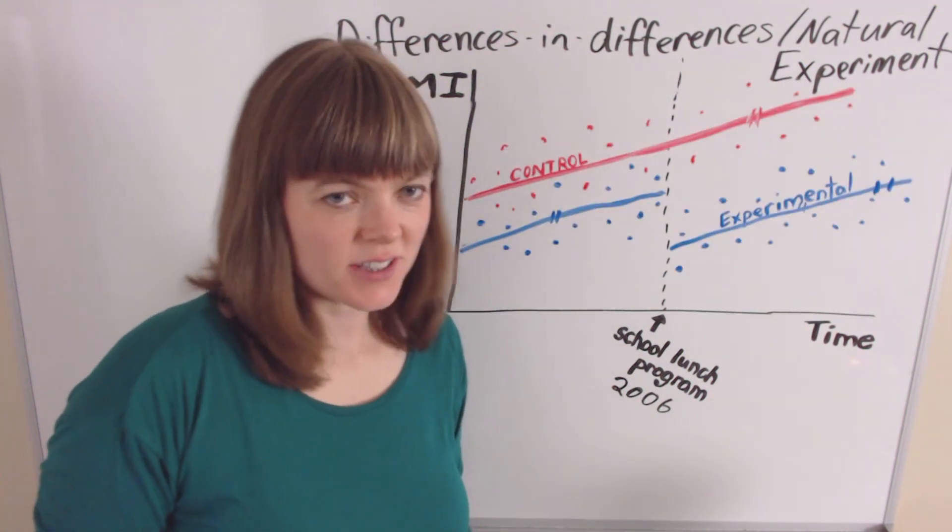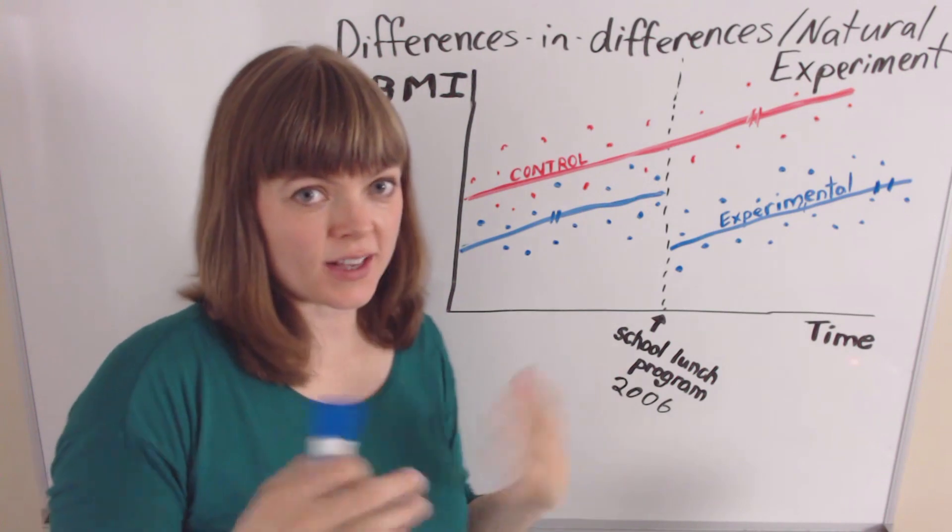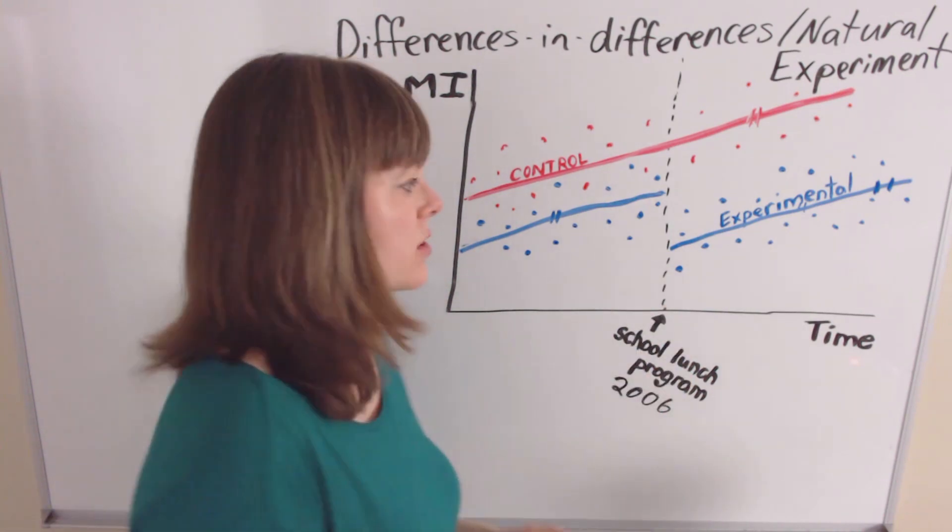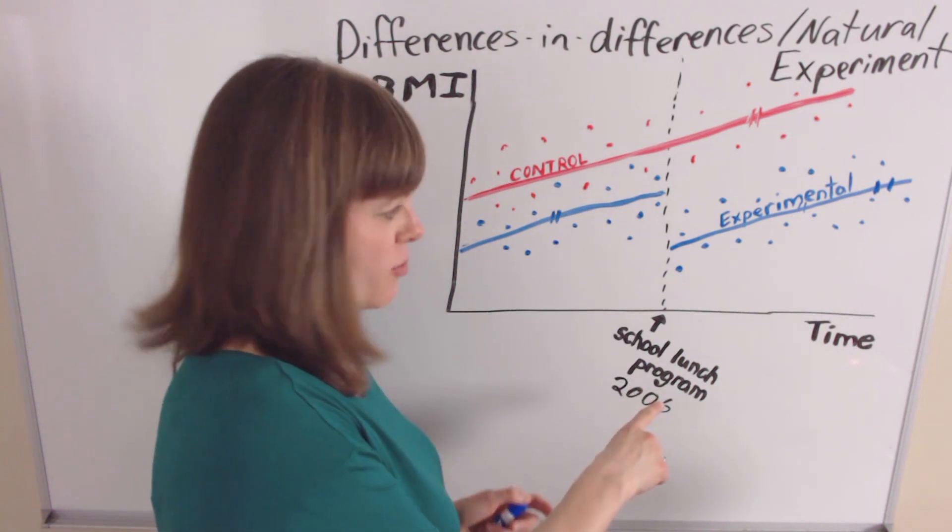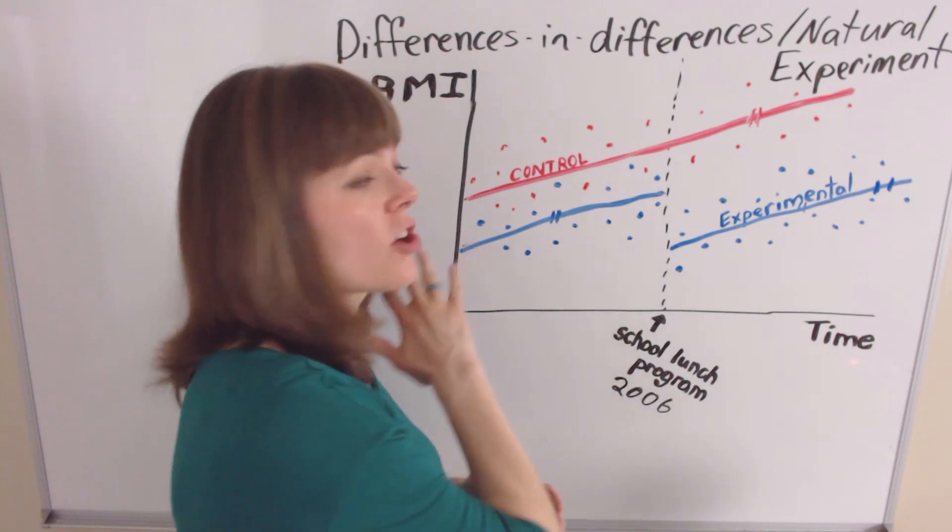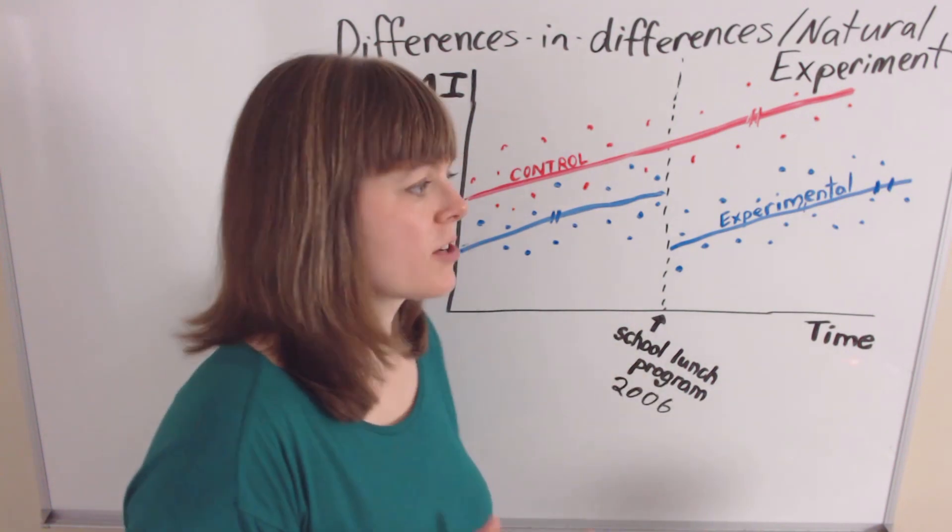One key in a natural experiment is that you have a control and experimental group. So you have one school, or maybe it's a number of schools, who are implementing this school lunch program in 2006, and then you have another set of schools that are not implementing any program in 2006.